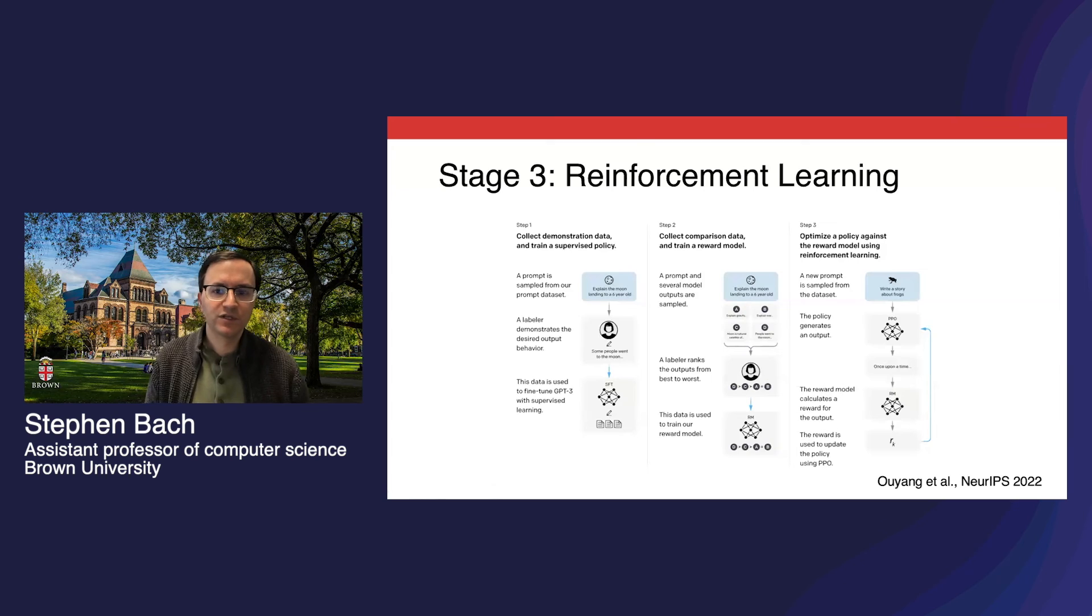This kind of reinforcement learning was proposed by OpenAI soon after instruction tuning came out. As this diagram from their paper shows, it starts with a language model that has already received supervised training. Then, human annotations about which outputs are better than others are used to train a reward model that can provide rewards at scale. For this reason, it's often called reinforcement learning from human feedback.